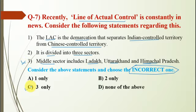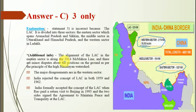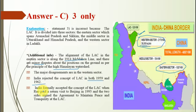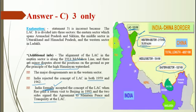The incorrect statement is the third, so the correct option is C. It is the western sector that includes Ladakh, not the middle sector. The eastern sector includes Arunachal Pradesh and Sikkim. The alignment of the LAC in the eastern sector is along the 1914 McMahon Line, with minor disputes about the position on the ground. The major disagreements are in the western sector. India rejected the concept of the LAC in both 1959 and 1962, and formally accepted the principle of the LAC when P.V. Narasimha Rao visited Beijing in 1993, when the two sides signed an agreement to maintain peace and tranquility along the LAC.